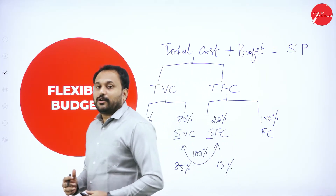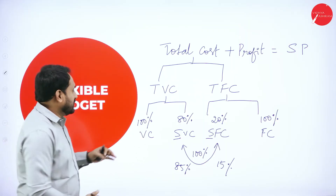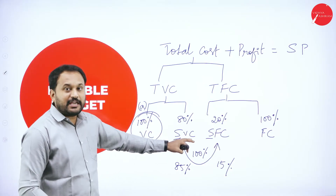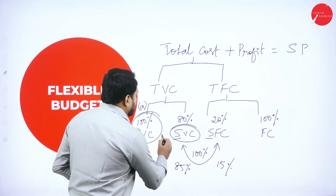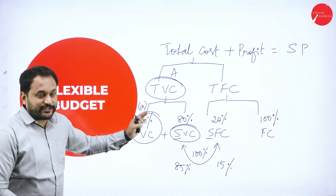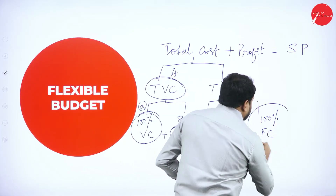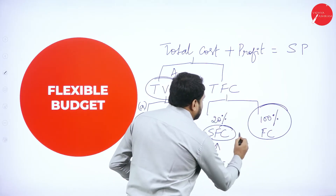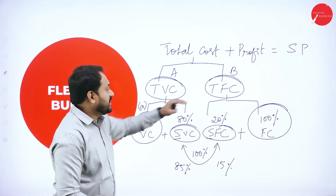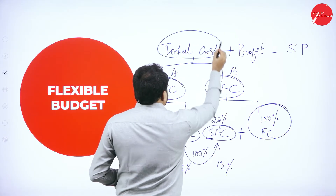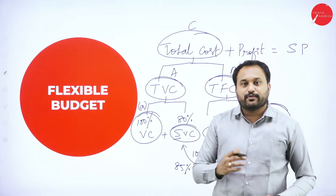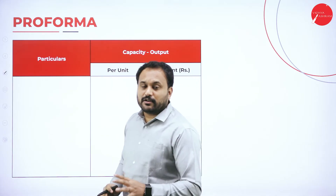The proforma of flexible budget always starts with 100% variable cost. Variable cost plus semi-variable cost gives Total Variable Cost — denote as A. Then, 100% fixed cost plus semi-fixed cost gives Total Fixed Cost — denote as B. A plus B gives Total Cost — denote as C. Total cost plus profit equals selling price. That is the flexible budget proforma.